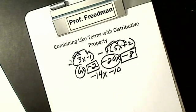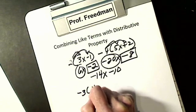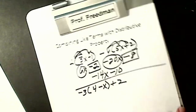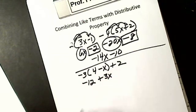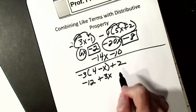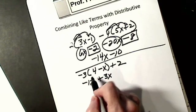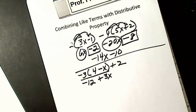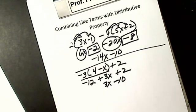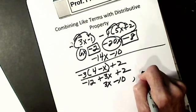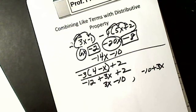Let's do another one: negative 3 times (4 minus x) plus 2. Distributive property: negative 3 times 4 is negative 12; like signs are plus, so negative 3 times negative x is positive 3x. This plus 2 has nothing to do with distributive property — it's outside the parentheses operation — so it stays as plus 2. Then I combine: I can't combine the letters since there's nothing else like them, so I get 3x minus 10. Putting the number first as negative 10 plus 3x is also fine — commutative property, order doesn't matter.